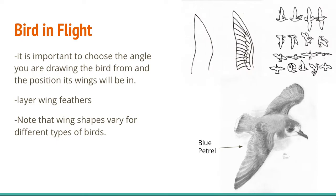The next type you can choose is a bird in flight. As you can probably tell from its name, this is a bird that's flying. It is important to choose the angle that you are drawing the bird from. As you can see from this little drawing, there are lots of different angles and positions you may see a bird in flight from, and therefore that you might want to draw it from. Also something important is to layer the feathers in the wing. Like you see here, there are different layers like the primary feathers.